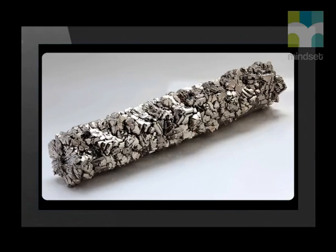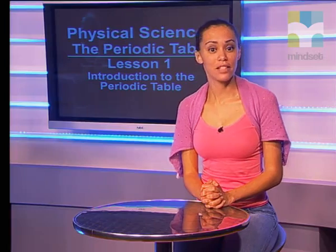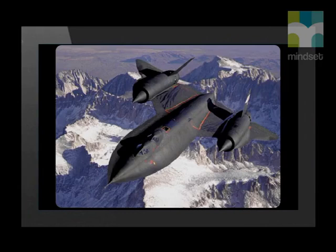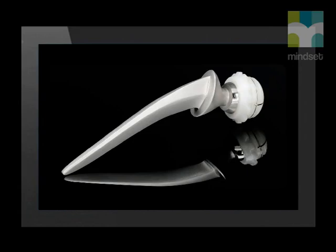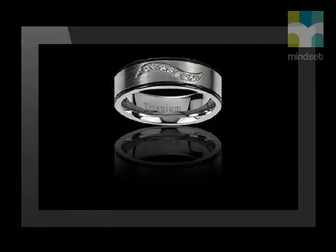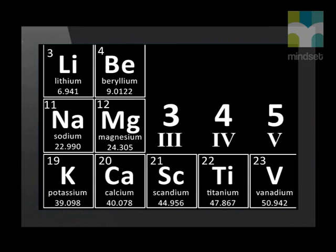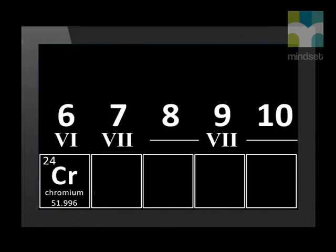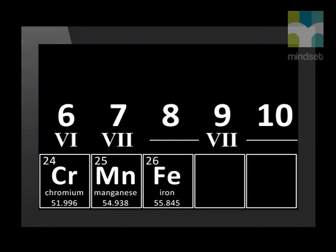Titanium is a silvery-white grey metal. It is very strong but much lighter than most steels, so it is very useful. It is used in many industries such as aerospace, in medicine as artificial joints, and in jewellery. The next element is vanadium, symbol capital V, with 23 protons. Chromium is next — its symbol is capital C, lowercase r, with atomic number 24. Manganese has atomic number 25 and its symbol is capital M, lowercase n. Next is iron, symbol capital F, lowercase e, from the Latin ferrum, with atomic number 26.